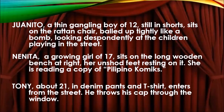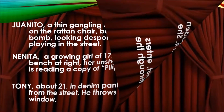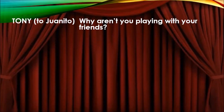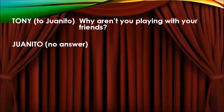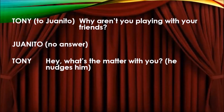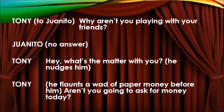Tony, about 21, in denim pants and T-shirt, enters from the street and throws his cap through the window. Now this is the dialogue — Tony to Wanito: 'Why aren't you playing with your friends?' Wanito gives no answer. Tony: 'Hey, what's the matter with you?' He flaunts a wad of paper money before him: 'Aren't you going to ask for money today?' These excerpts from that drama surely took a process to finish creatively.